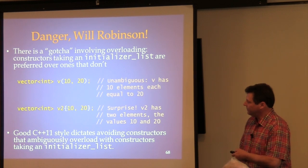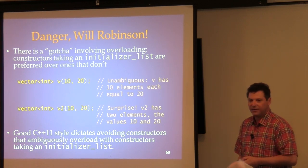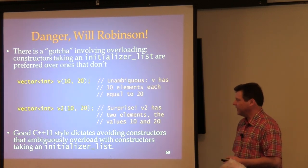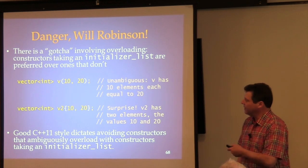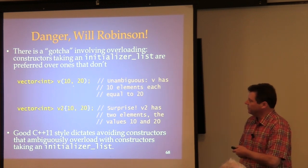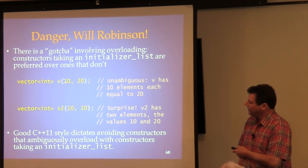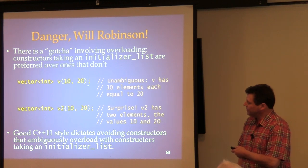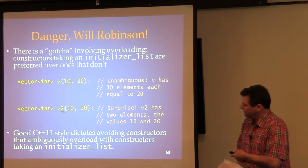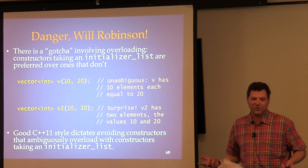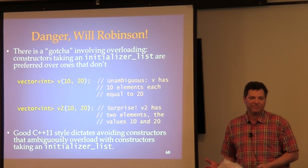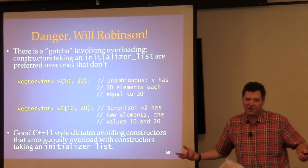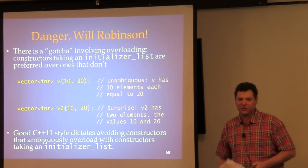There's no solution to this problem with legacy code. Going forward, don't design your interfaces such that a constructor taking an initializer list can be confused with other constructors. If you're designing a class today, you would never give it both a count-value constructor and an initializer-list constructor. That's the bottom line.